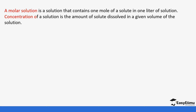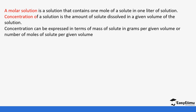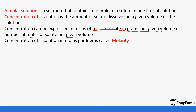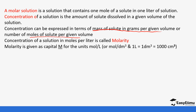Concentration of a solution is the amount of solute dissolved in a given volume of a solution. Concentration can be expressed in two ways: it can be expressed in terms of mass of solute in grams per given volume, or moles of solute per given volume. Mole per litre — one litre is the same as one dm³, which is the same as 1000 cm³. We'll be using this interconversion when doing our calculations.